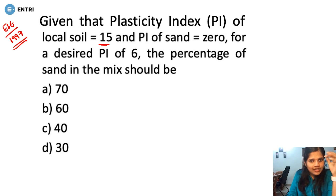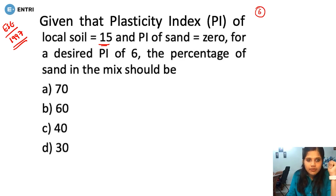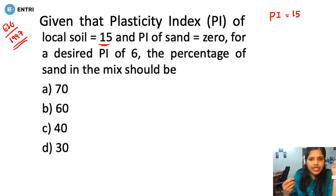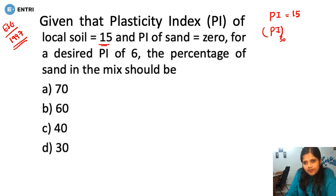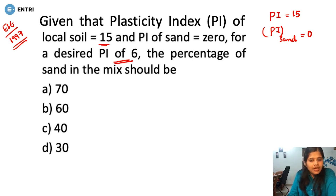If we have a local soil and we decide the plasticity index of 6, that means how much of the sand is going to be added. The plasticity index of soil is given as 15, and the plasticity index of sand is given as 0. So we need to find the percentage of sand in the mix to achieve a plasticity index of 6.